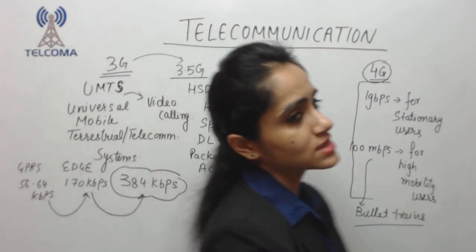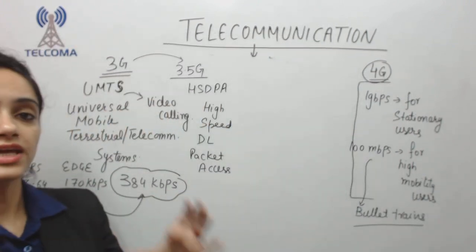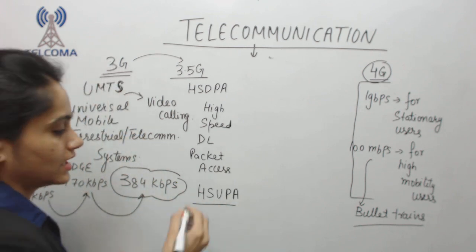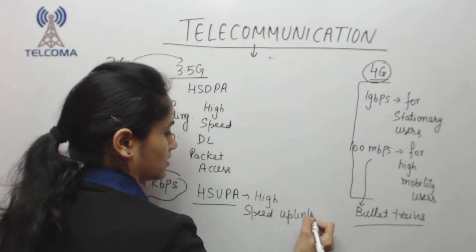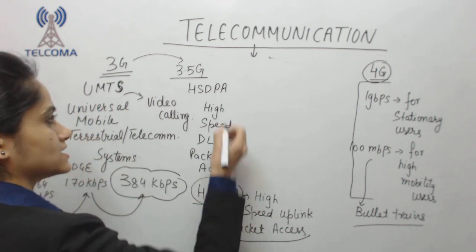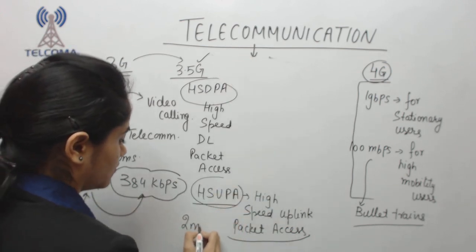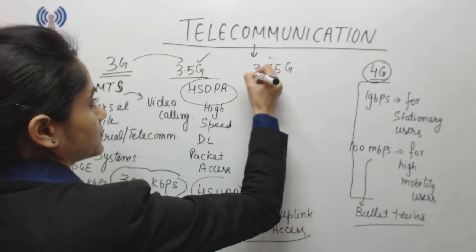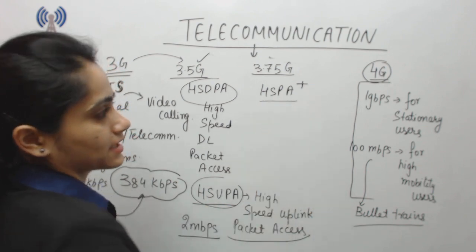After cloud computing emerged, upload speed also became important. So we introduced HSUPA — High Speed Uplink Packet Access. HSDPA and HSUPA together are under 3.5G, giving around 2 Mbps. After that we moved to 3.75G with HSPA+ (High Speed Packet Access Plus), where the '+' represents increased speeds.